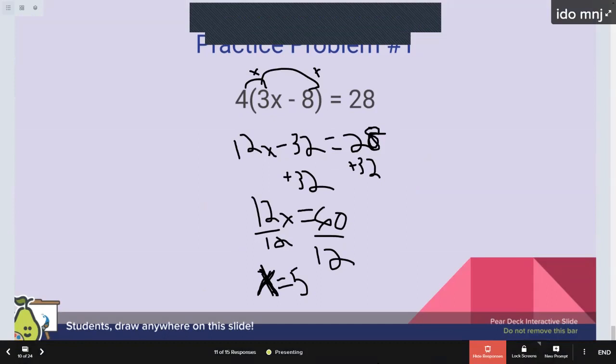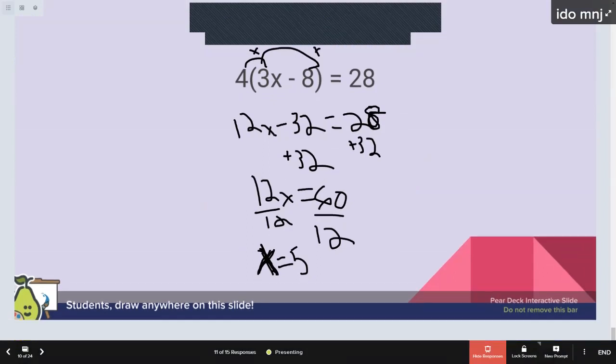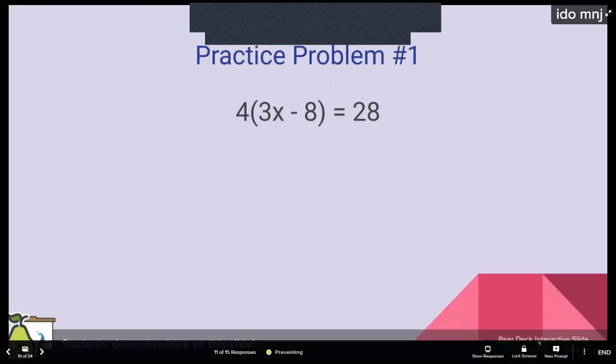All right, so let's move on. Let's do another one. And, so this one's 30 equals negative 5 outside of 6n plus 6. See what you guys do.